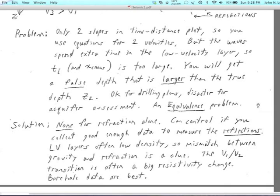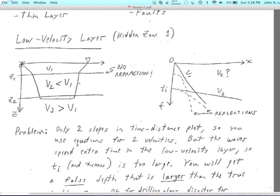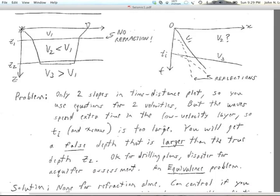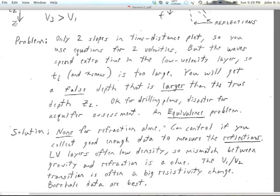This is really an equivalence problem. You have a trade-off between how low is that velocity, how much less than V1 is that velocity, versus how thick is that layer. And you can produce the same too large Ti with either a thin and very low velocity layer, or a thick and not so low velocity layer. So it's really hard to assess that.